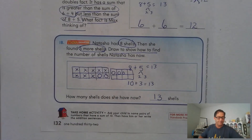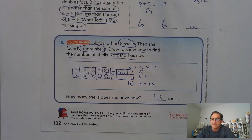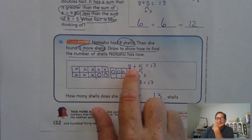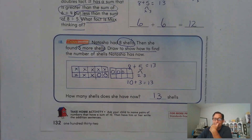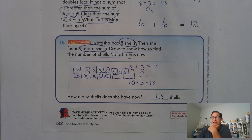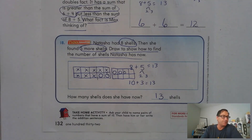Hopefully you understand how to make a 10 to make adding easier. These are things we can do in our head — eight plus five: I know eight plus two is 10, and two plus three is five, so 10 plus three is 13. Is it easier to just know eight plus five is 13? Yes. But if you get stuck, it's nice to have a strategy like making a 10 to find the sum. That's it for lesson 3-3 — until our next lesson, I'll see you soon.